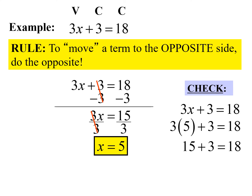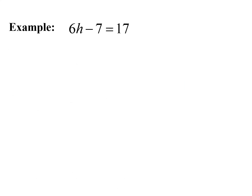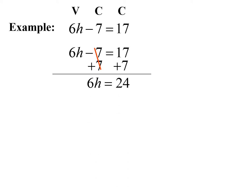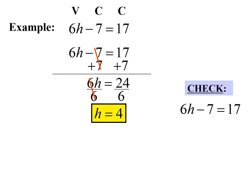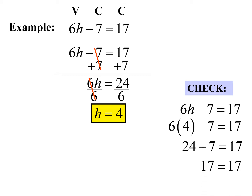Our next example: 6h minus 7 equals 17. Identify your terms — 6h is our variable term, negative 7 is a constant, 17 is a constant. We want to move constants to the same side. The opposite of negative 7 is positive 7, so I add 7 to both sides. Negative 7 plus 7 is 0, so it cancels. We get 6h equals 24, then divide both sides by 6, and h is equal to 4.